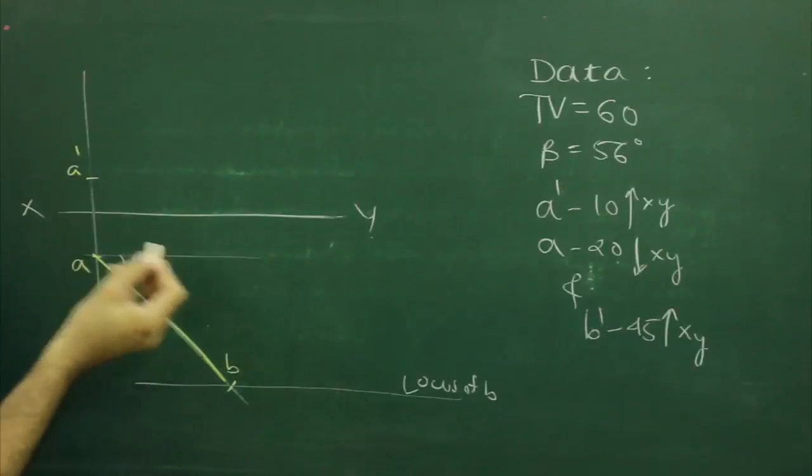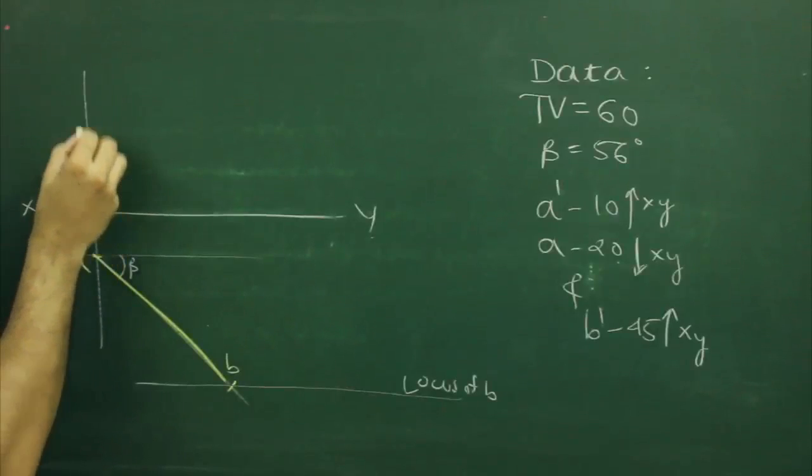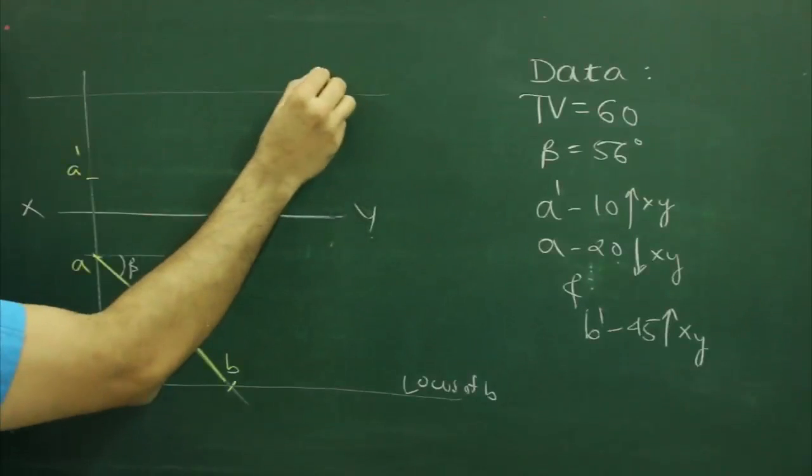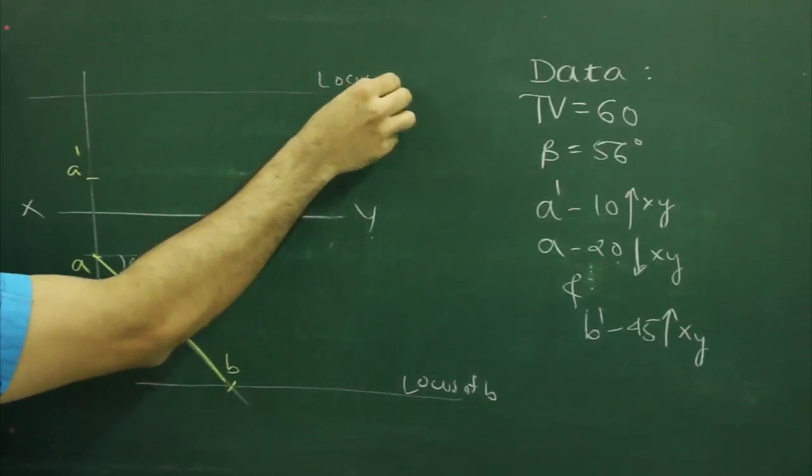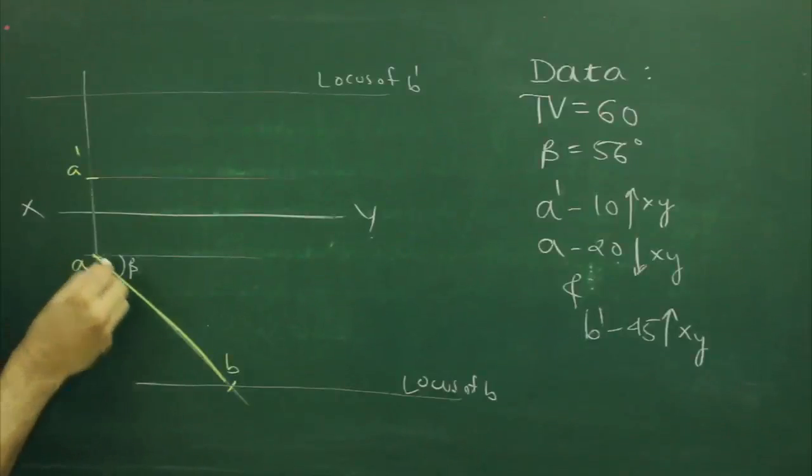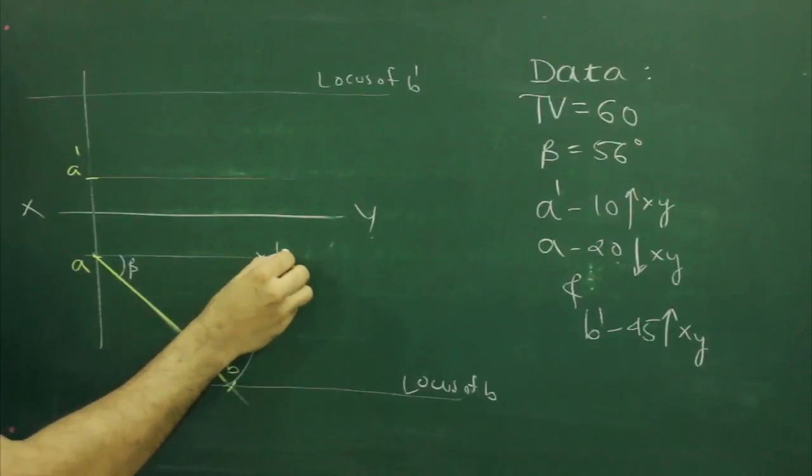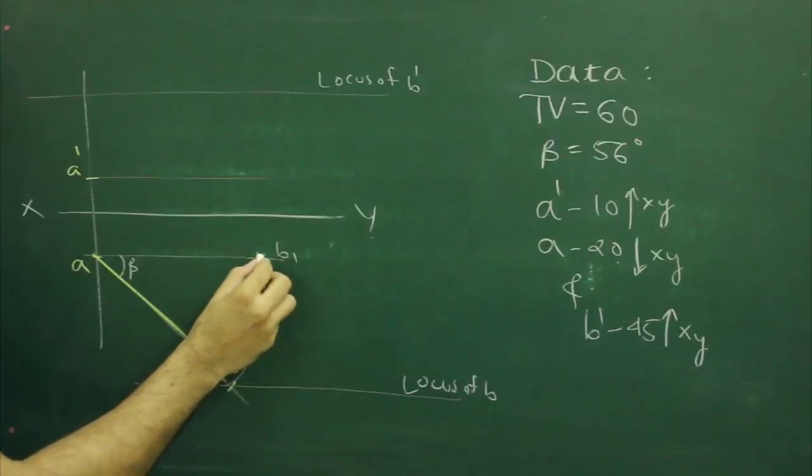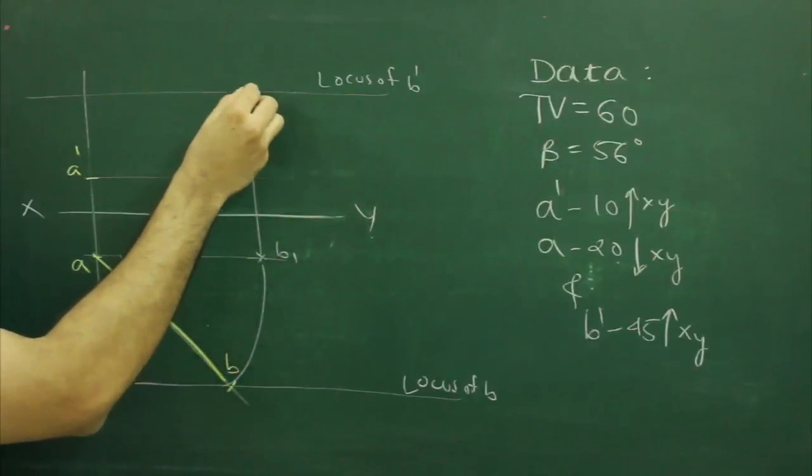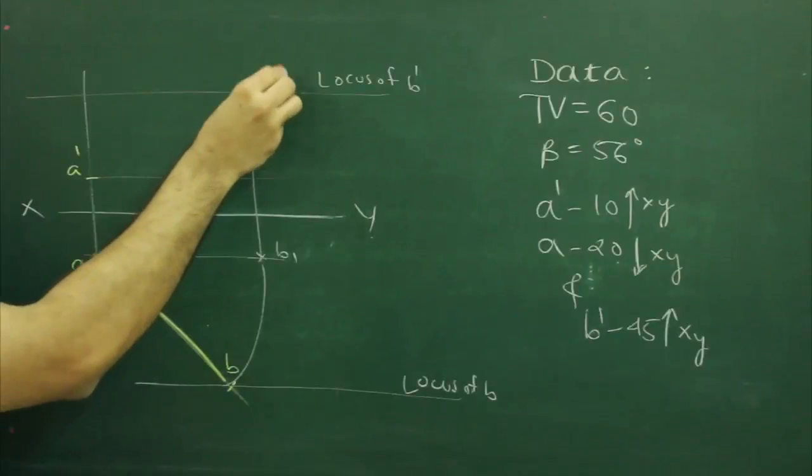After that we have B dash which is 45 above XY line. So from XY line you take 45 up and draw a locus of B dash. After that, we rotate AB keeping A point fixed, rotate it here, mark that point as B1, then project straight. Wherever it cuts, that point will be B1 dash.